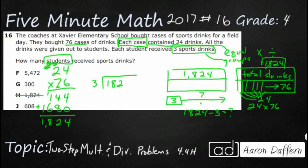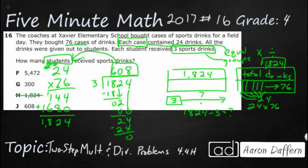Three goes into 1,824. Three goes into 18 six times — that's even. Bring down the next digit: that's two. Three goes into two zero times. Now we bring down the four, giving us 24. Three goes into 24 eight times, with nothing left over — which is nice and even. So now we know that 608 students each received three drinks. The answer is J.